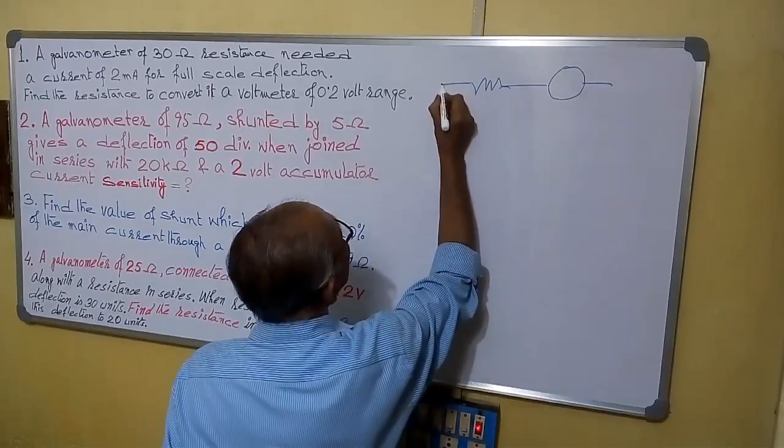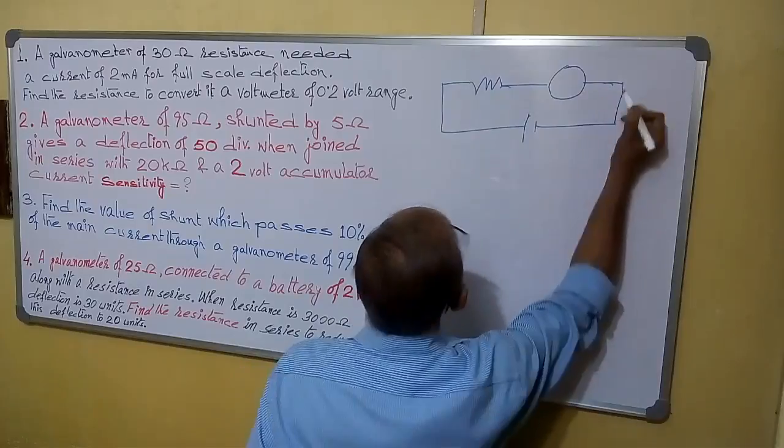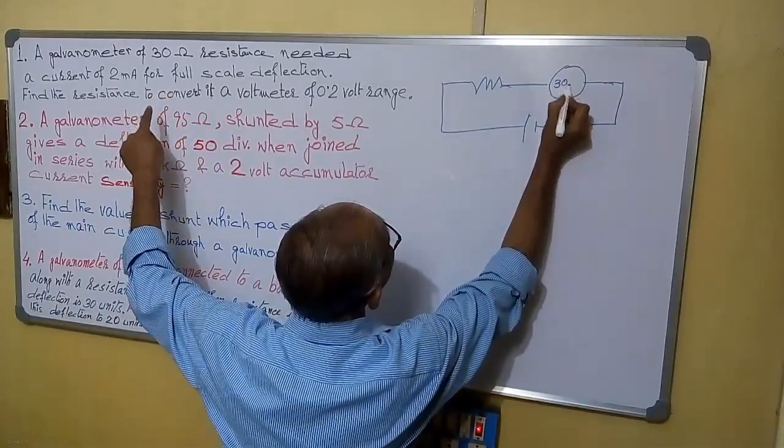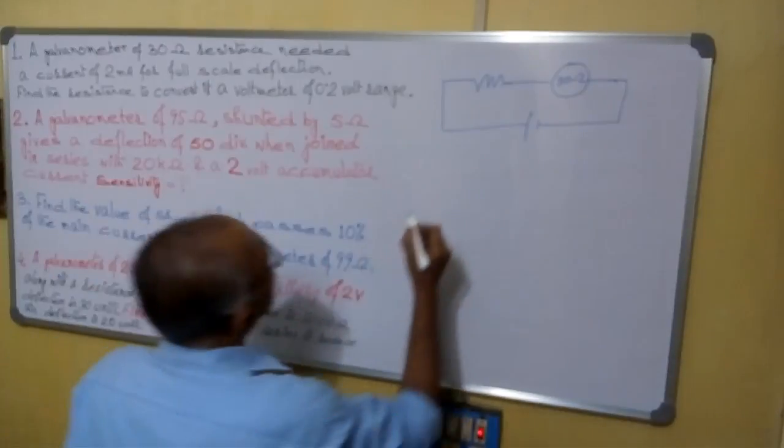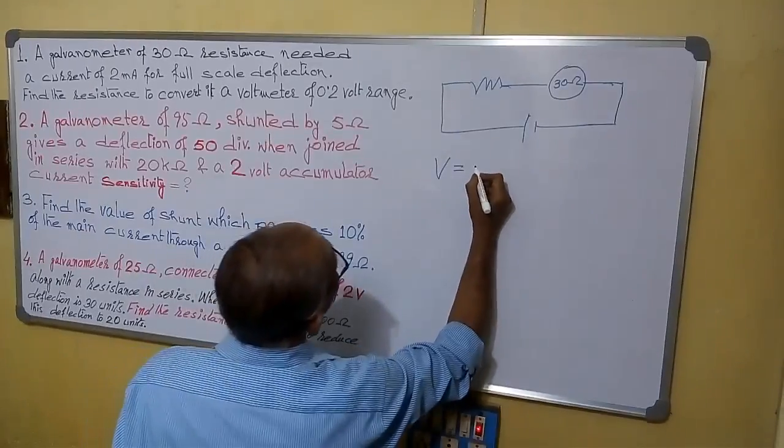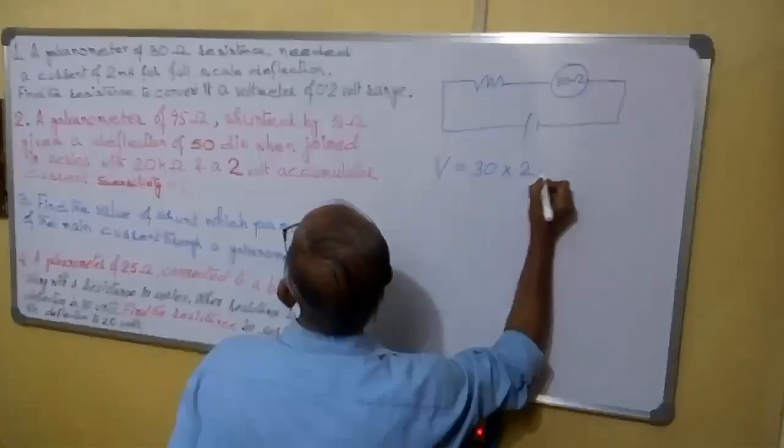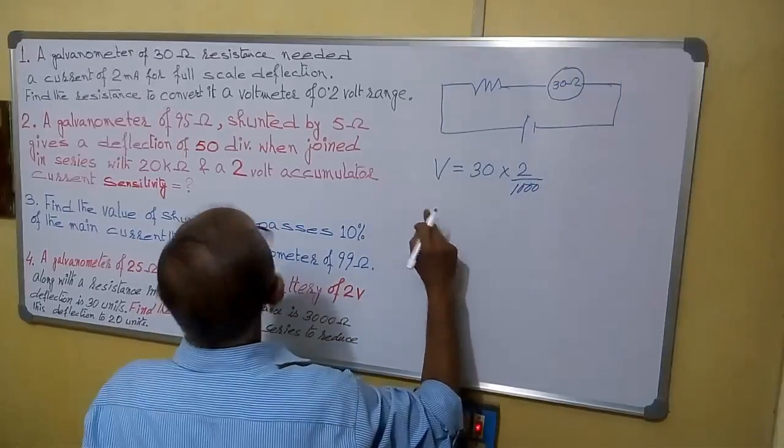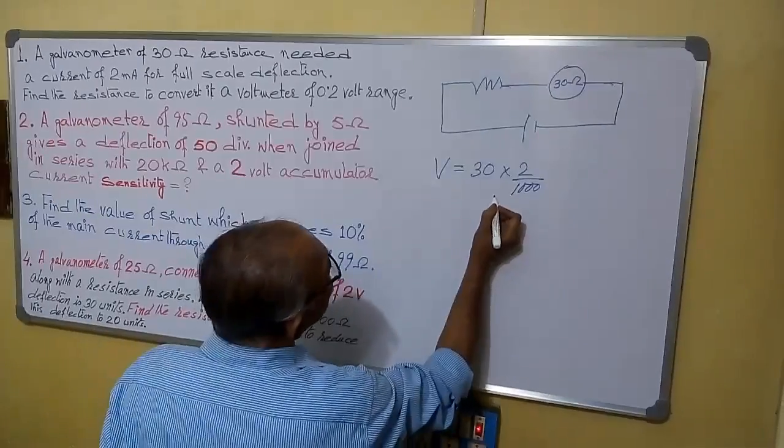So what was the original condition? Its resistance is 30 ohm and the current is 2 milliampere. So V equals to IR, so 30 into 2 by 1000, this much volt. So you can cut it by 3 by 50, that equals to 0.06 volt.